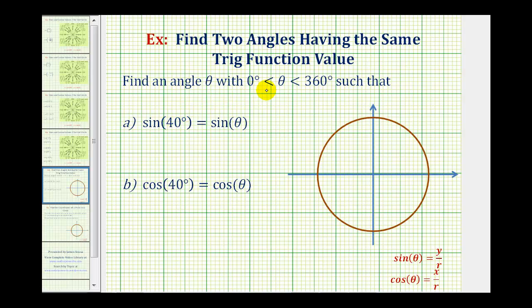We want to find an angle theta between zero and 360 degrees such that sine 40 degrees equals sine theta. Let's start by sketching the reference triangle for 40 degrees.